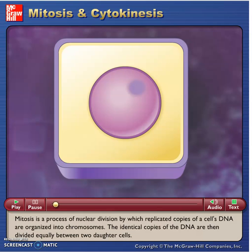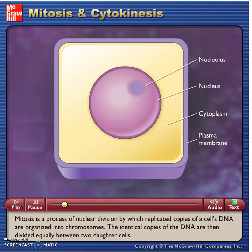Mitosis is a process of nuclear division by which replicated copies of a cell's DNA are organized into chromosomes. The identical copies of the DNA are then divided equally between two daughter cells.